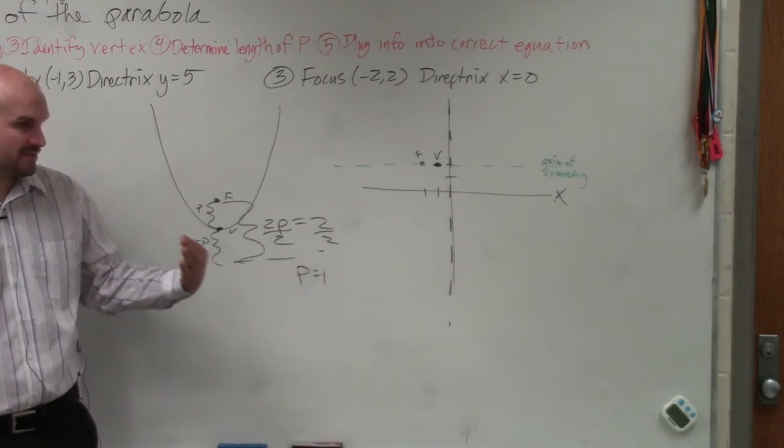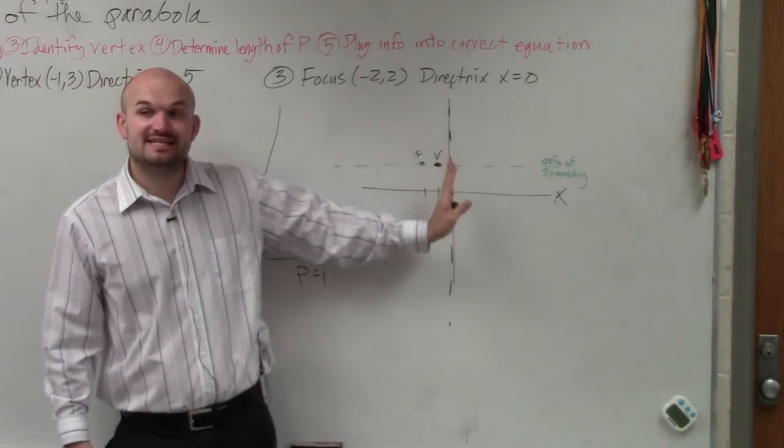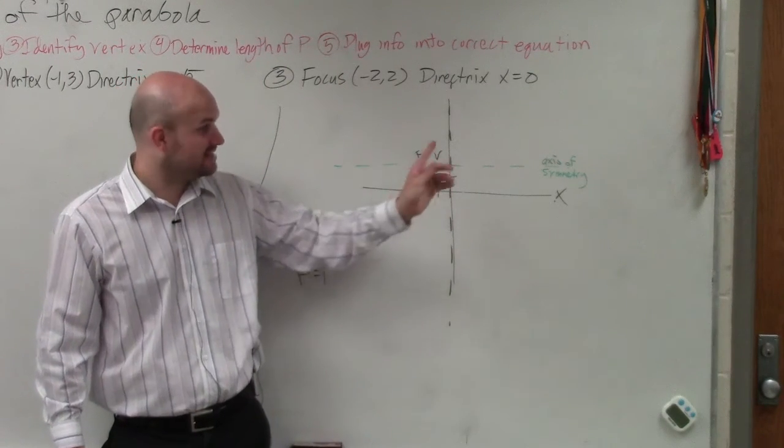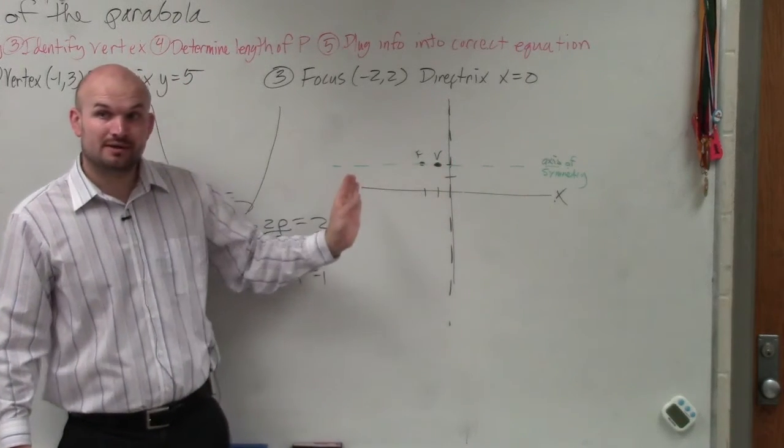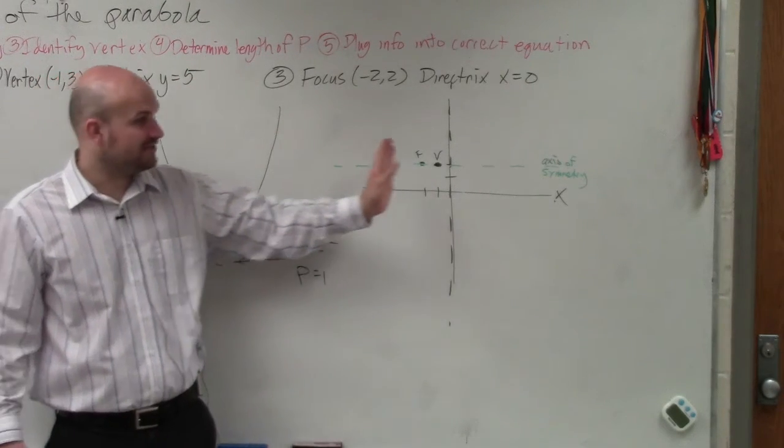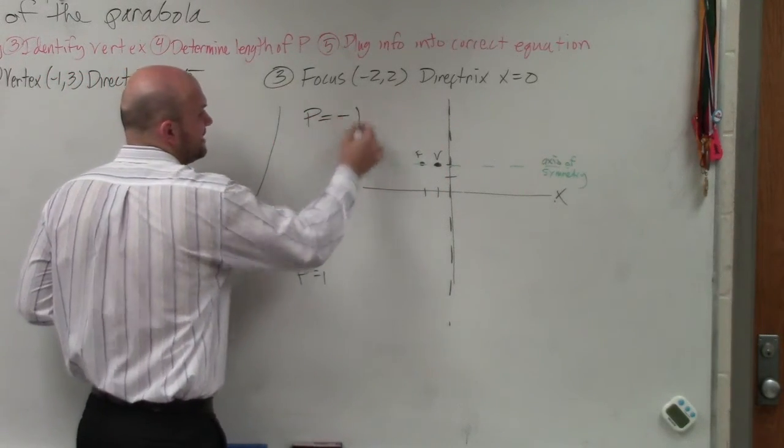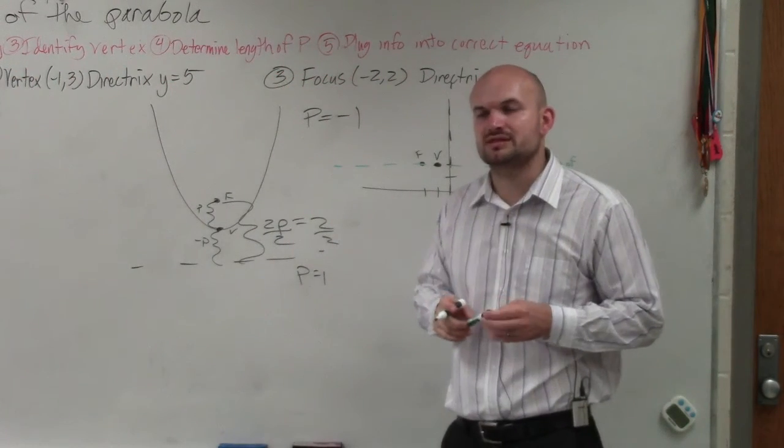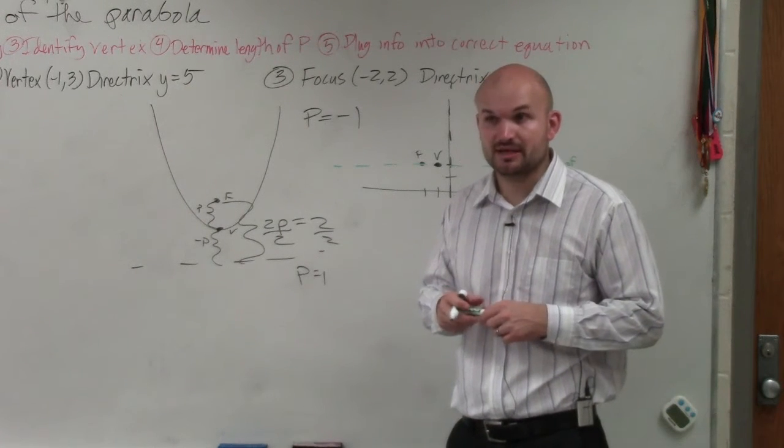Now, here's where I want you guys to get, here's where we've got to get a little careful. Because yes, the length is 1. However, the distance, the value of p is the distance from your vertex to your focus. The length is 1, but the distance is going in the negative direction. So therefore, p is actually going to be equal to negative 1. So p is actually equal to negative 1. Because the direction is going to the left. Julian, does that make sense? Julian, does that make sense? It's really important to make sure, because p is going to be negative.